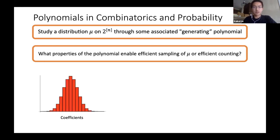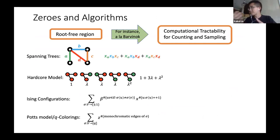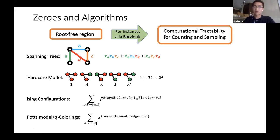This also comes up as partition functions of various spin systems, for example for the Ising model, the Potts model, and q-colorings. An algorithmic question we'll be interested in is: what kind of properties of the polynomial will enable efficient sampling or counting algorithms for mu? And sort of roughly speaking, whenever you have some kind of a root-free region for an associated generating polynomial, you can expect computational tractability for your counting or sampling problem.